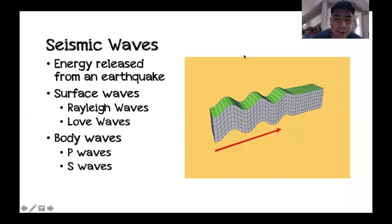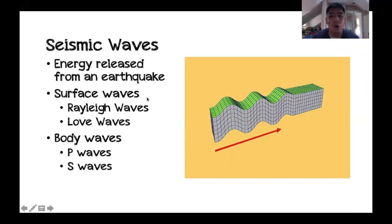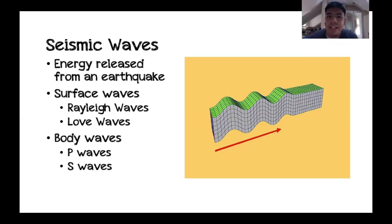Seismic waves are a form of energy released from an earthquake. There are two kinds: surface waves and body waves. Surface waves travel only along the earth's exterior or crust, whereas body waves can travel through the interior of the earth.